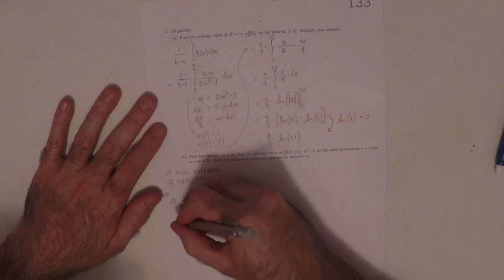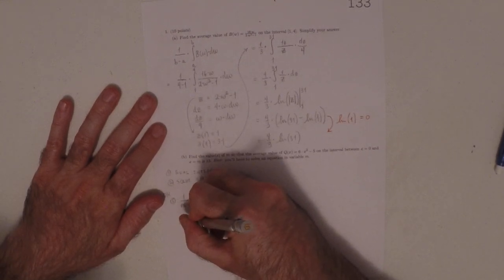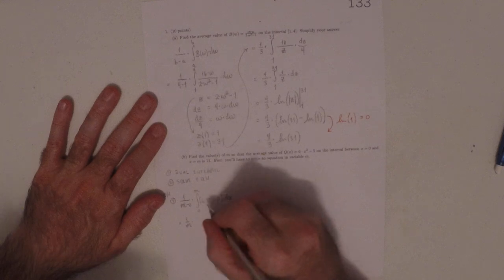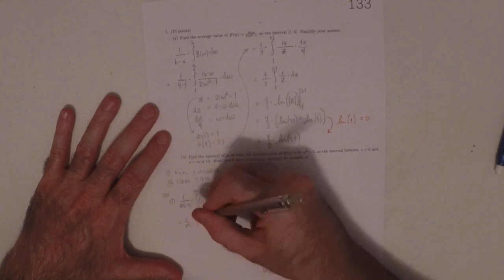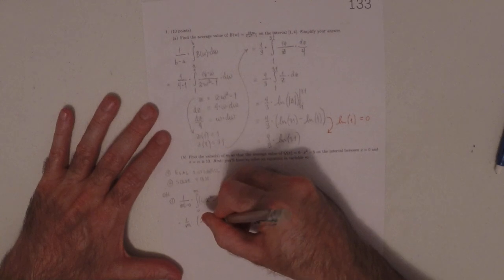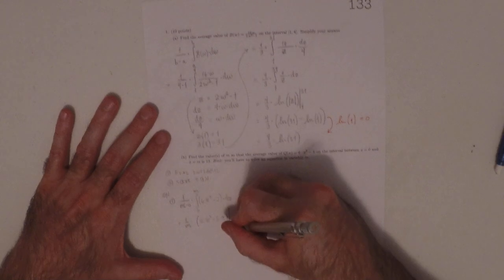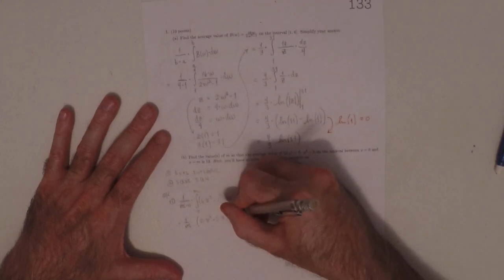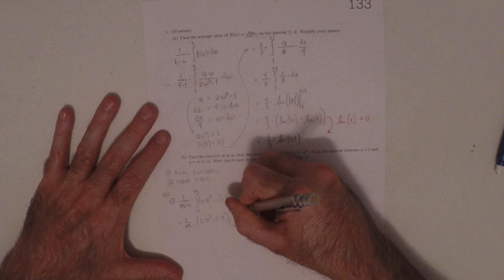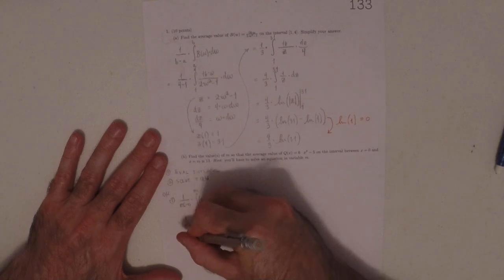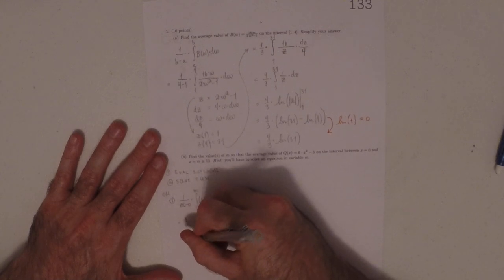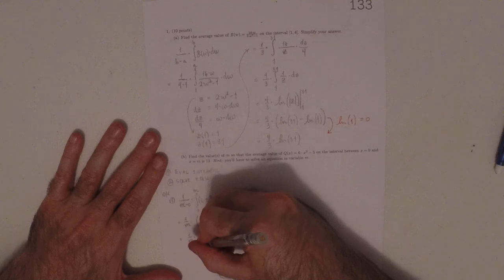So that's 1 over m multiplied by... now the anti-derivative of 6x squared is 2x cubed, and the anti-derivative of negative 5 is negative 5x.